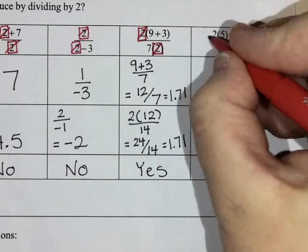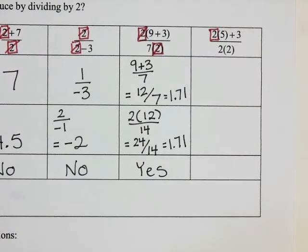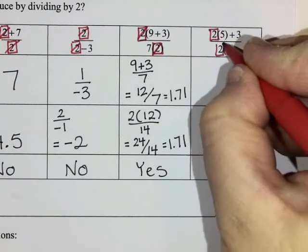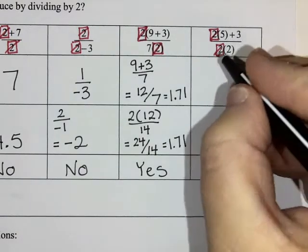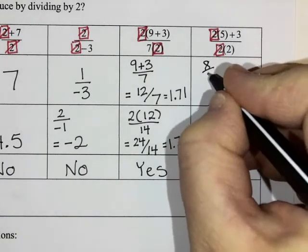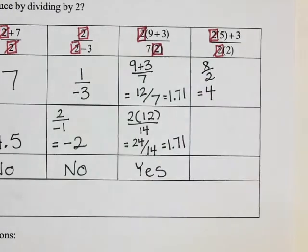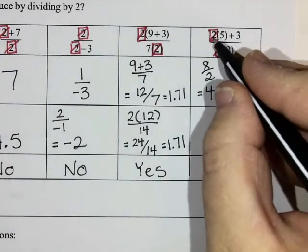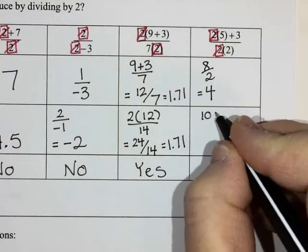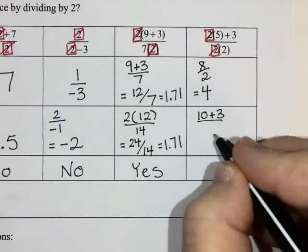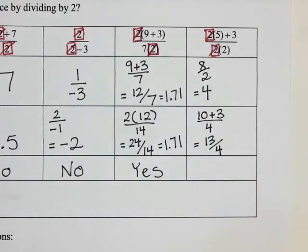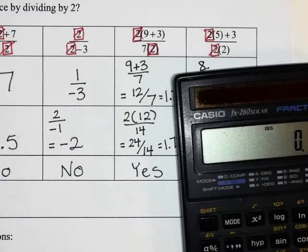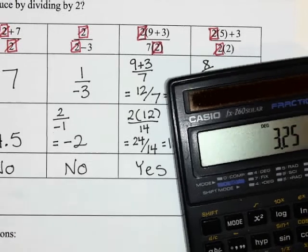Last one: I've got some twos. On the bottom I have two twos — I'll use the first one. Dividing that out leaves me with five plus three over two, so five plus three is eight, divided by two is four. But if I actually do the question properly, I multiply before I add: two times five is ten, plus three over two times two is four, giving thirteen over four. Thirteen over four is 3.25, not four. So did I get the same answer? No.